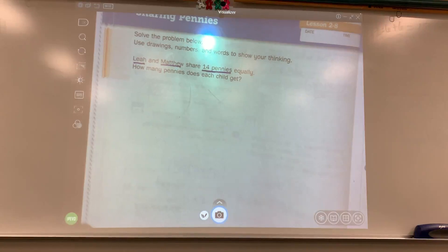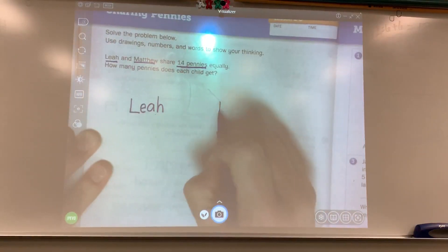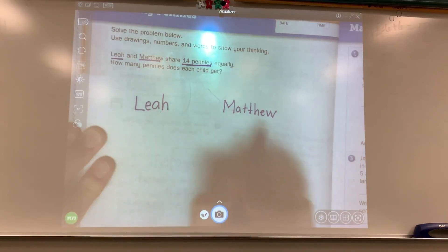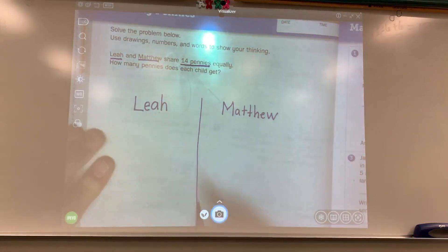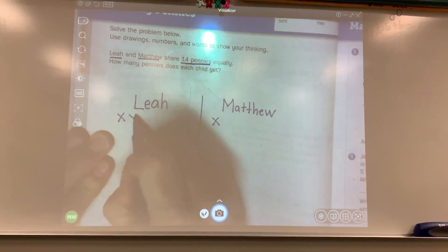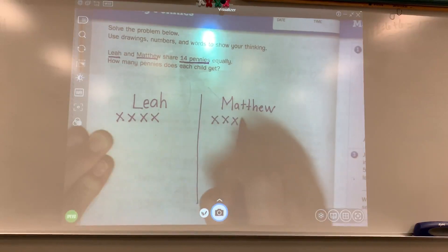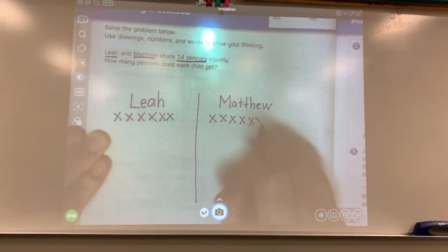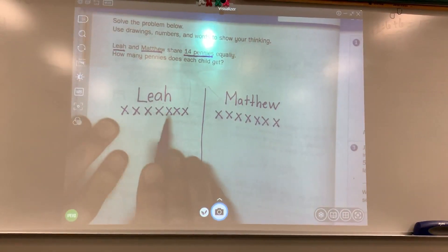So I have Leah and Matthew. We have 14 pennies and we need to share them equally. So I'm going to draw a line. So I have one penny, two pennies, three, four, five, six, seven, eight, nine, 10, 11, 12, 13, 14.